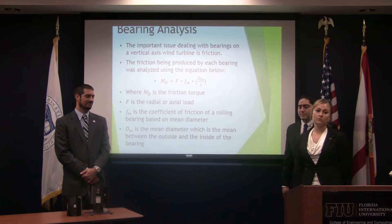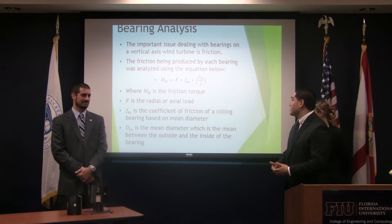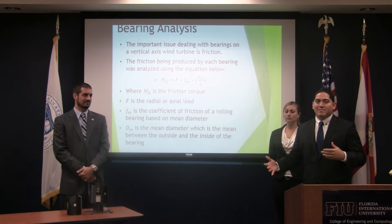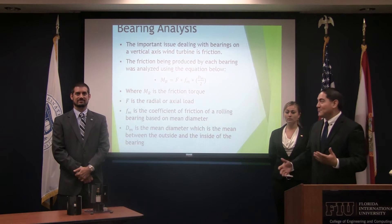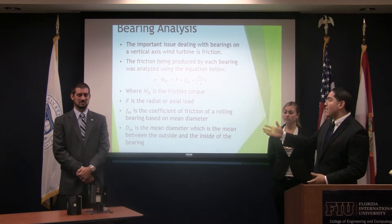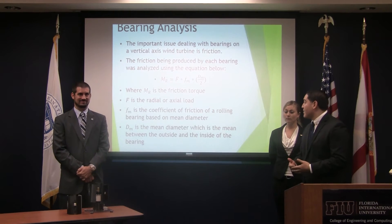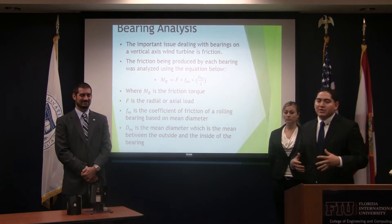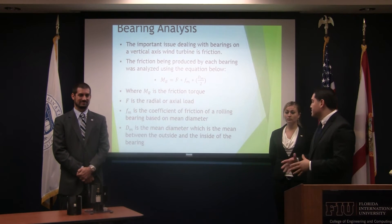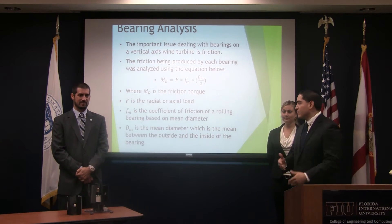The important issue dealing with bearings and the vertical axis wind turbine is friction — that is the big factor that either enhances or makes your turbine really bad. The friction produced by a bearing was analyzed using the equation where MR is the friction torque, F is the radial axial load, F is the coefficient of friction of a rolling bearing — specific to certain types of bearings — and DM is the mean diameter, which is a coordination between the inner and outer diameter of the actual bearing.